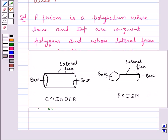Let's have a look at the figure. Now this is a cylinder. These are the two bases of the cylinder and this is the lateral face. Now this is a prism. These are the bases and these are the lateral faces. According to the definition of the prism, the base and the top are congruent polygons and these lateral faces are parallelograms.